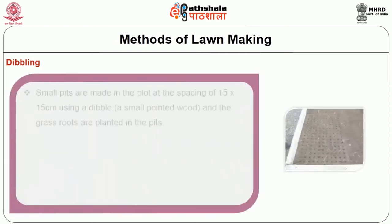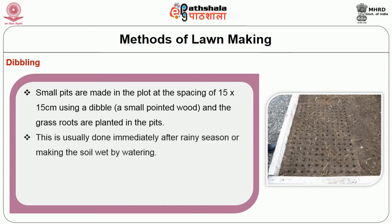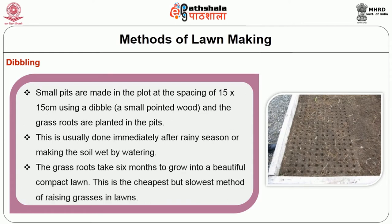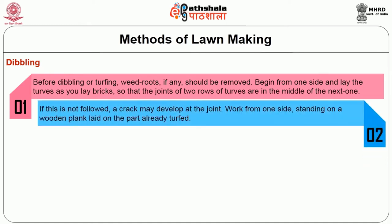Then next is dippling. Small pits are made in the plot at a spacing of 15 x 15 cm using a dibble, that is a small pointed wood, and the grass roots are planted in the pits. This is usually done immediately after the rainy season or by making the soil wet by watering. The grass roots take 6 months to grow into a beautiful compact lawn. This is the cheapest but slowest method of raising grasses in lawn. Before dippling or turfing, weed roots if any should be removed. Begin from one side and lay the turfs as you lay bricks so that the joints of two rows of turfs are in the middle of the next one. If this is not followed, a crack may develop at the joints.